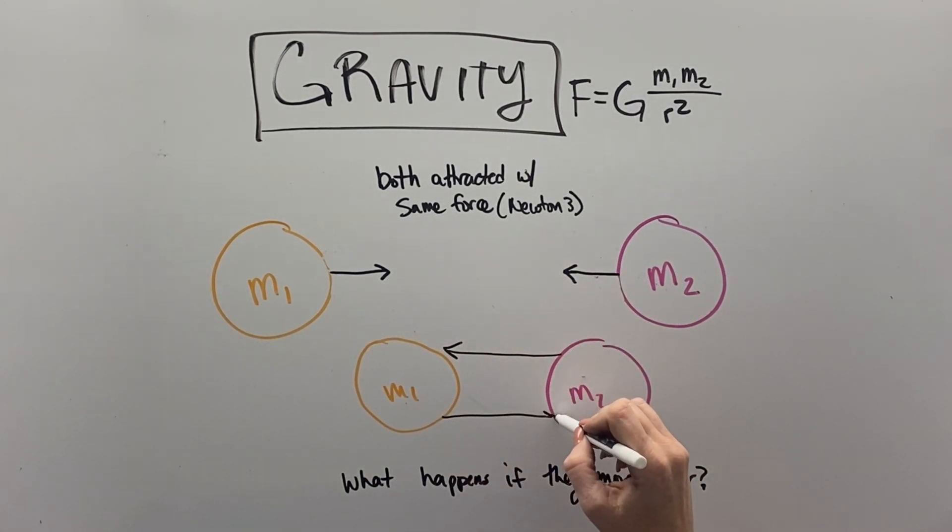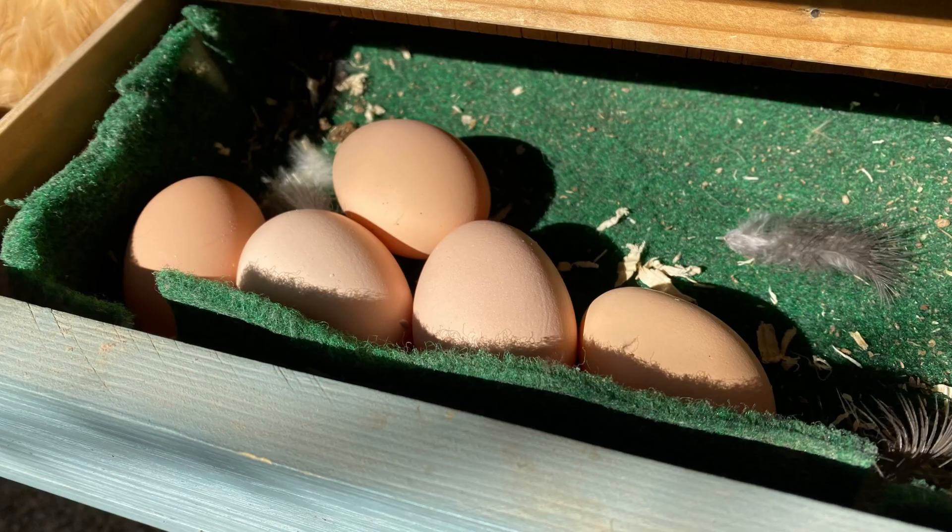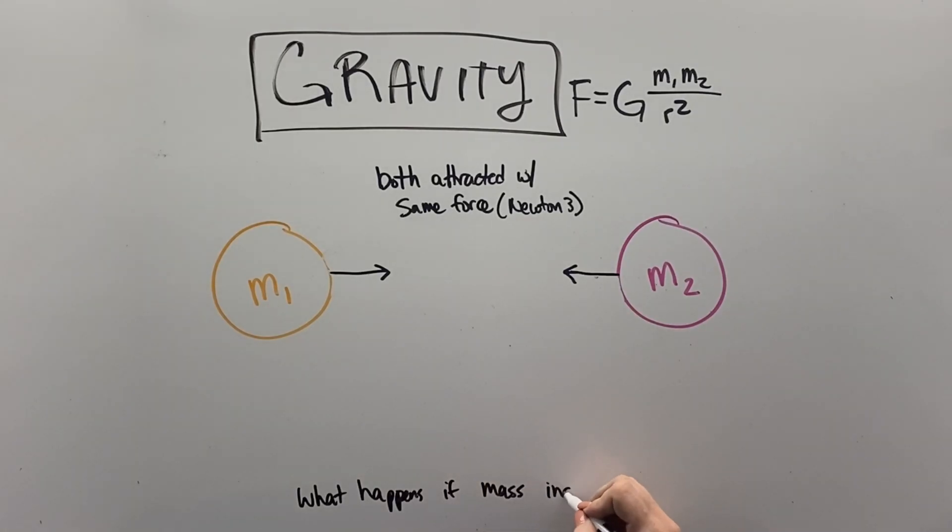Now, if things move closer, you can see that the gravity between them increases as distance decreases. And so, a lot of things are likely to stick towards each other, like these chicken eggs in the box just naturally gravitate towards each other.